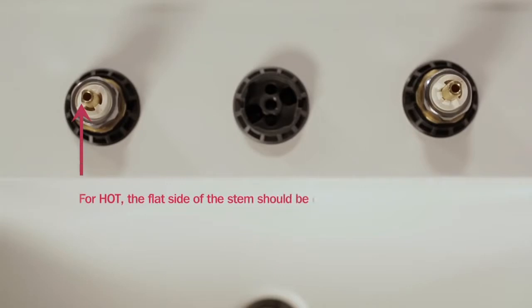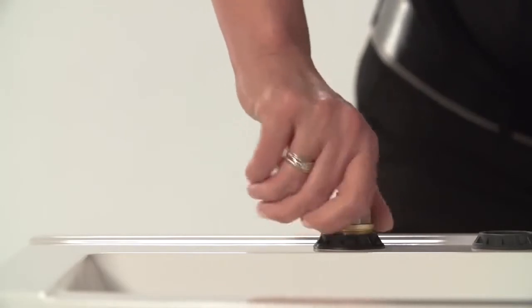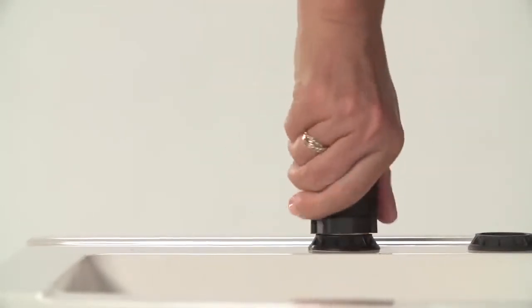For the hot side, the flat side of the stem should be on the left and the handle limit stop should be in the 2 o'clock to 8 o'clock position. Begin tightening the anchor nut by hand, then finish tightening it with the wrench provided.